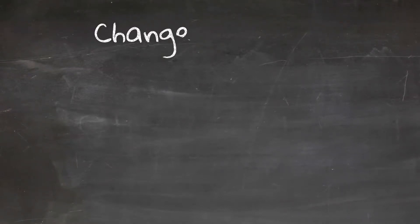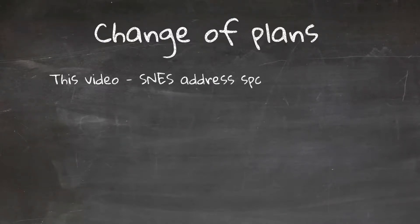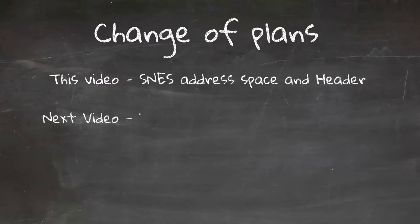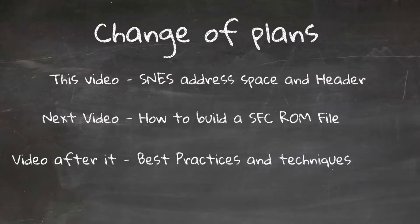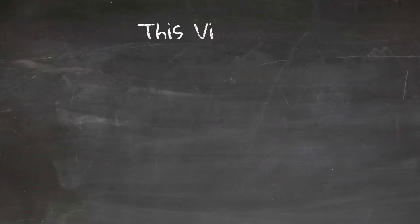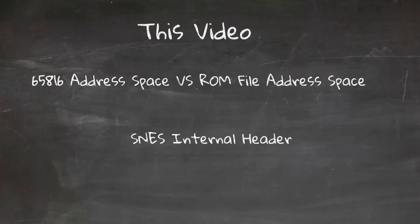In the last video I said this video was going to be about how the map works and a walkthrough on how to build a SNES ROM file in 64TAS. Sadly this turned into a 10-page monster so I'm splitting it into two videos. Video 4 will now have how to assemble a ROM. In this video I'm going to introduce how the SNES sees the cart memory and its own memory, and then explain how the emulator file holds the cart memory.